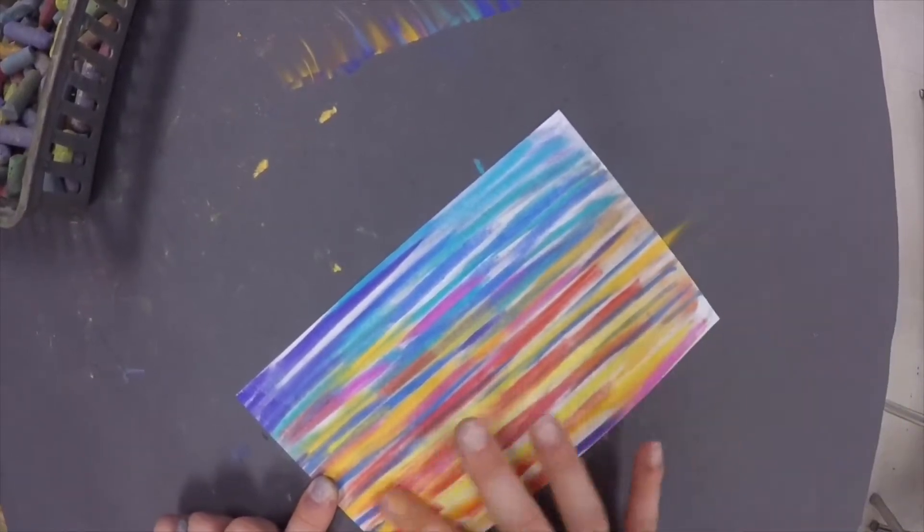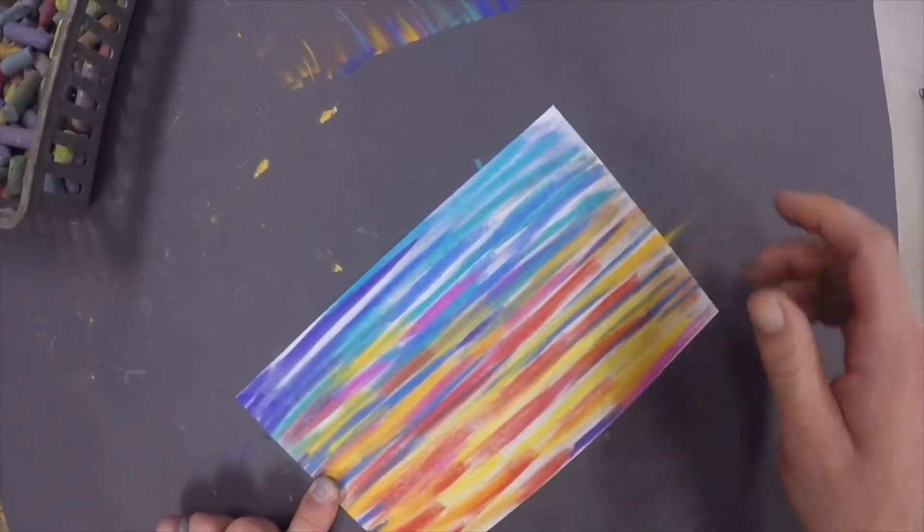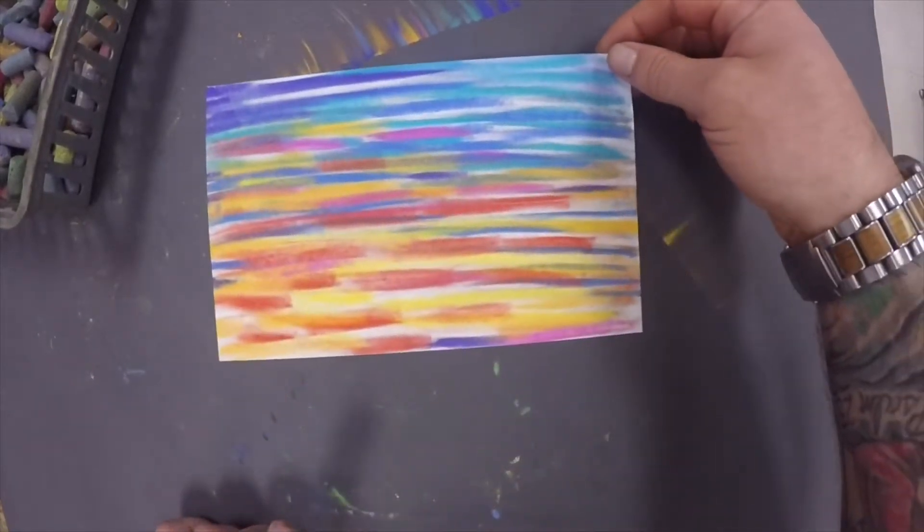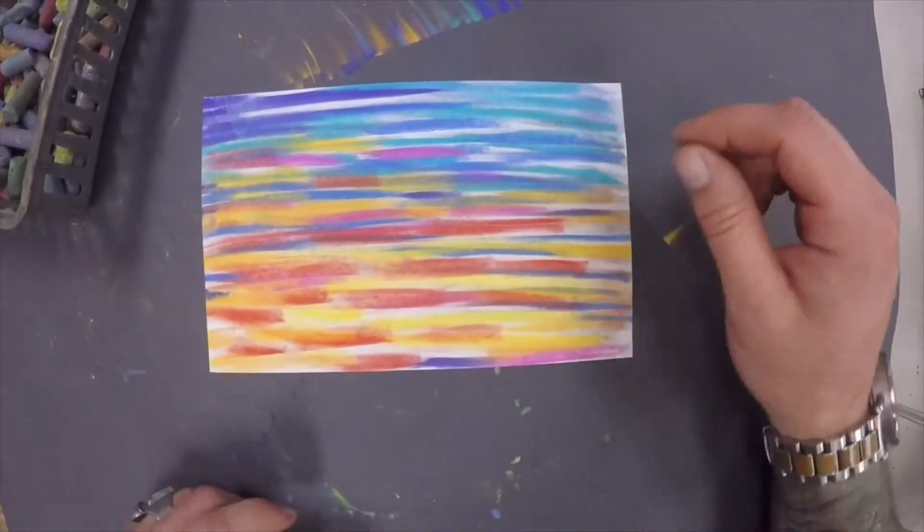those are going to be down closer to our horizon line. They're going to be closer to where the sun is going behind the horizon of the earth.